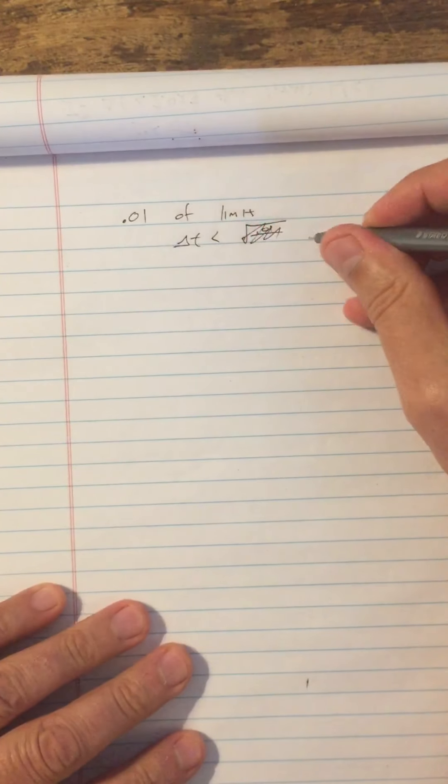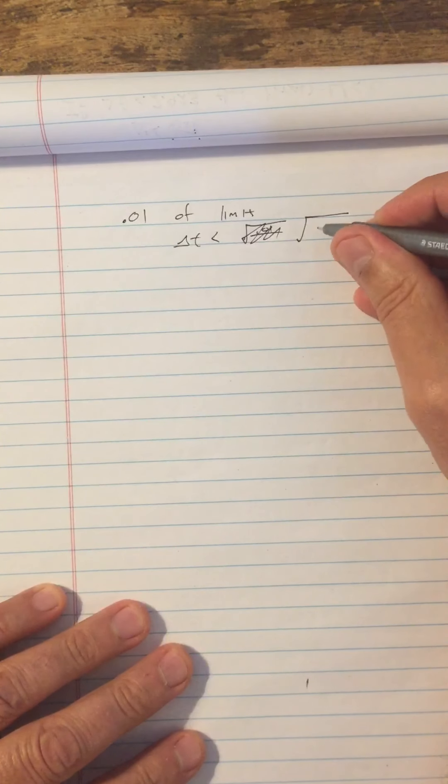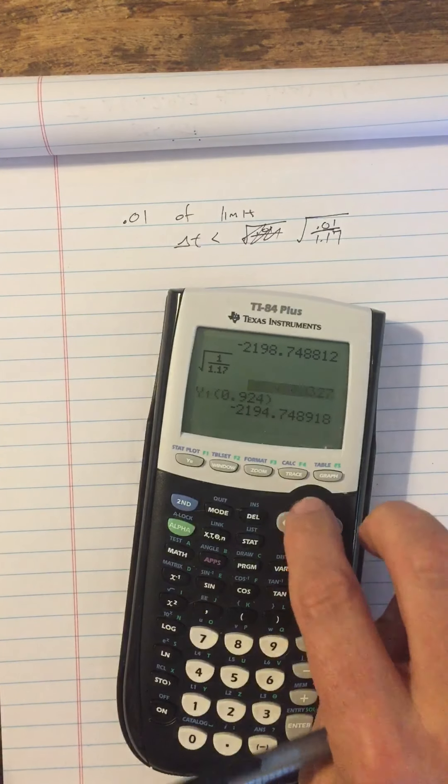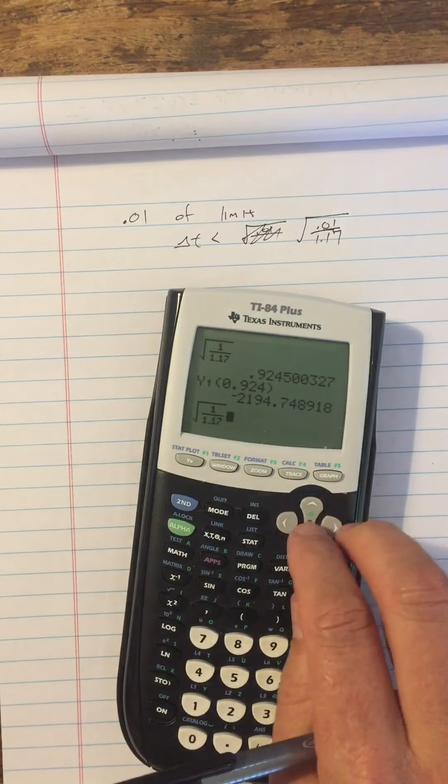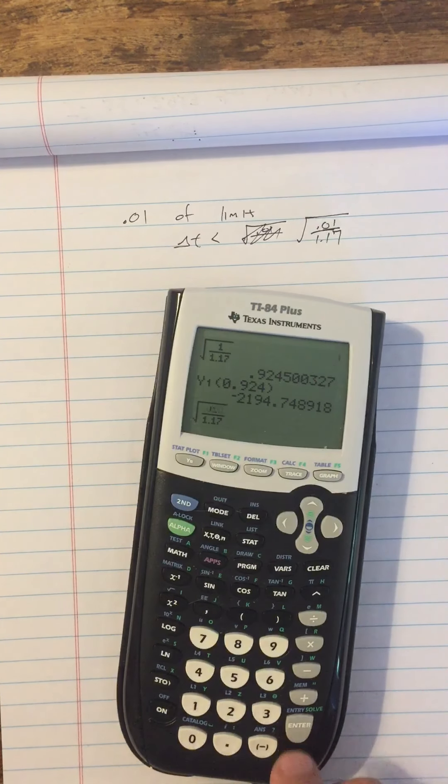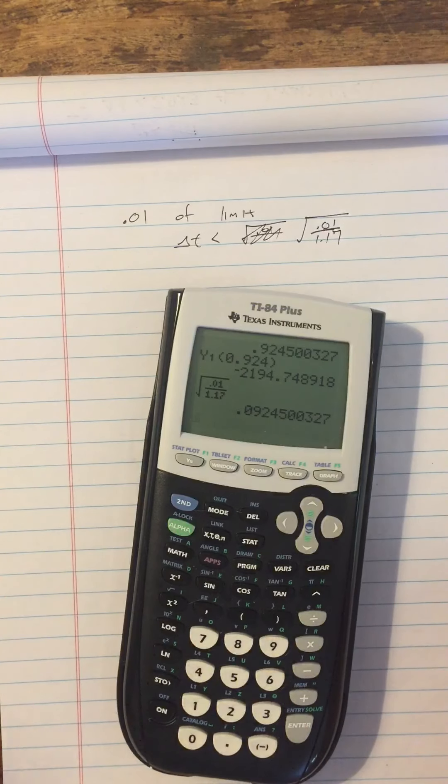So I just do that. This is not asked in the sheet, it's just to explore further. 0.01. I get 0.0924.